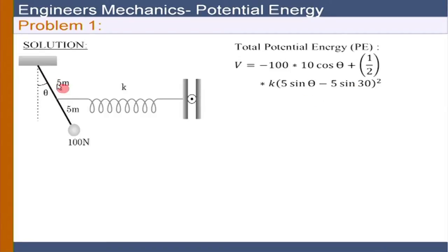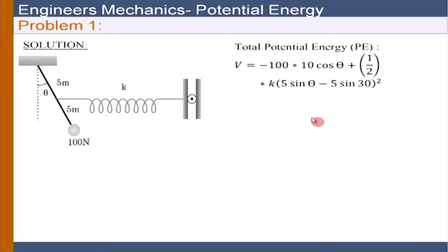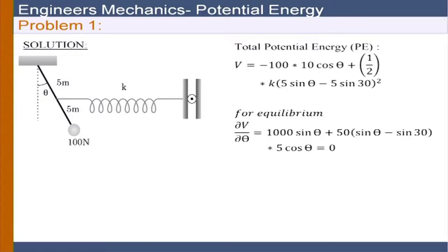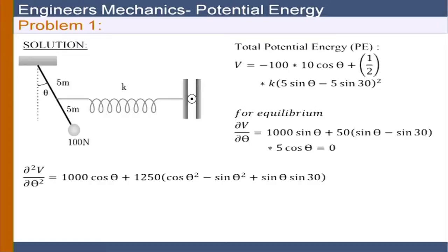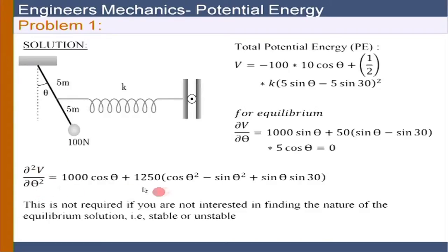Remember it should actually be 5 sin 30 degrees minus 5 sin theta, but since we have a square term it does not matter — a plus or minus sign mistake will not hamper the result. However, for the weight potential energy we must be extremely careful about signs. Once the potential energy is done, we can look at equilibrium: dV/dθ is given, and the higher-order derivative d²V/dθ² is also given, though this is only required if we want to determine stability.